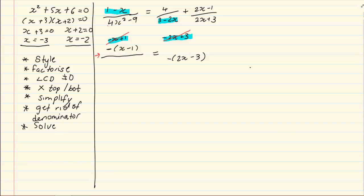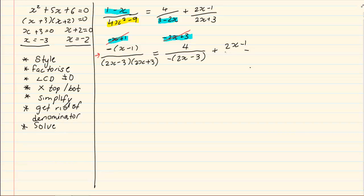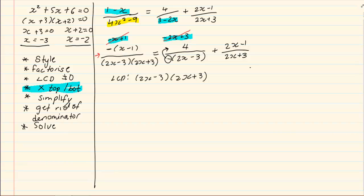Now we factorize wherever possible. 4x squared minus 9 can become 2x minus 3 times 2x plus 3. On the second expression we have 4, and on the third expression we have 2x minus 1 all over 2x plus 3. Our denominator is going to be 2x minus 3 times 2x plus 3. Remember that a negative can move to the top. Our LCD is 2x minus 3 into 2x plus 3. We multiply the top and bottom to get the denominators the same. In the first expression we already have 2x minus 3 times 2x plus 3.